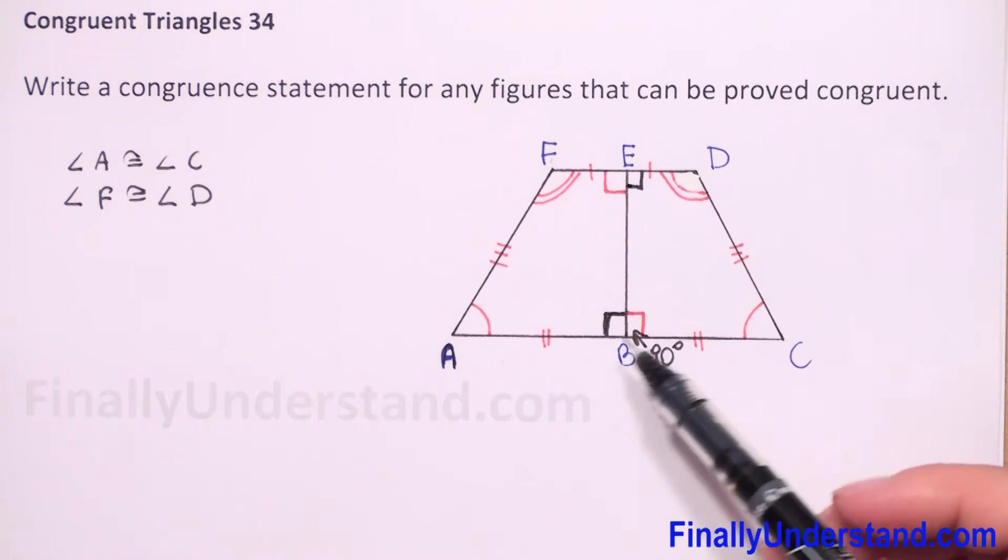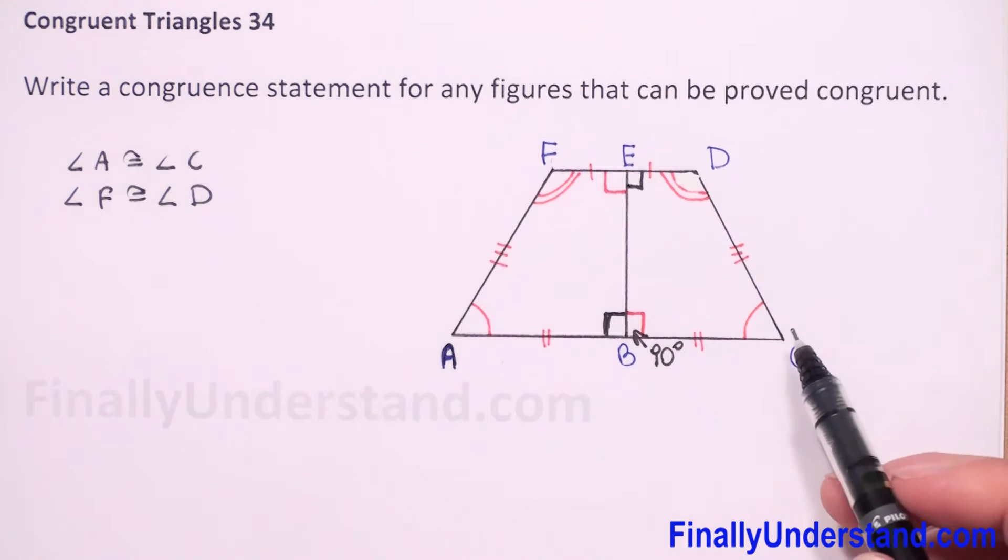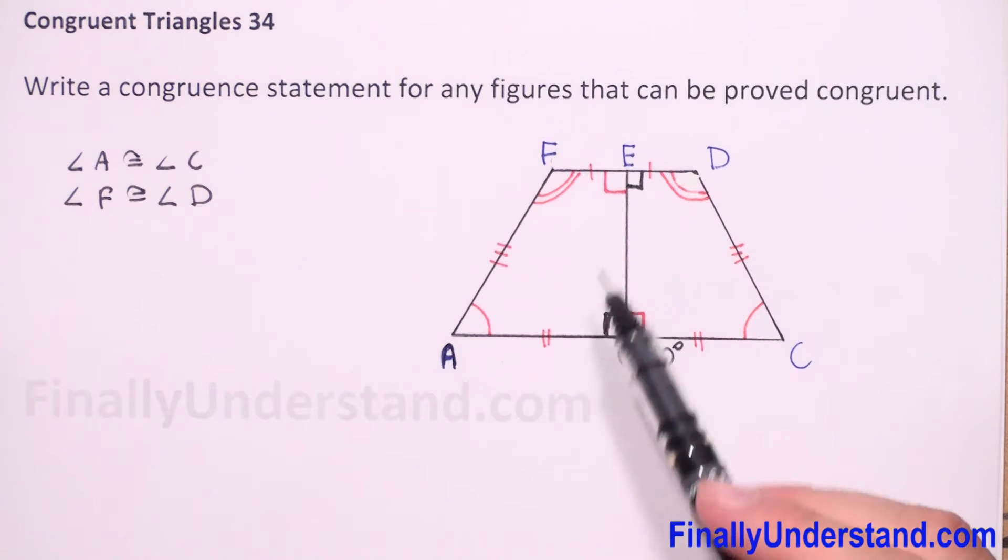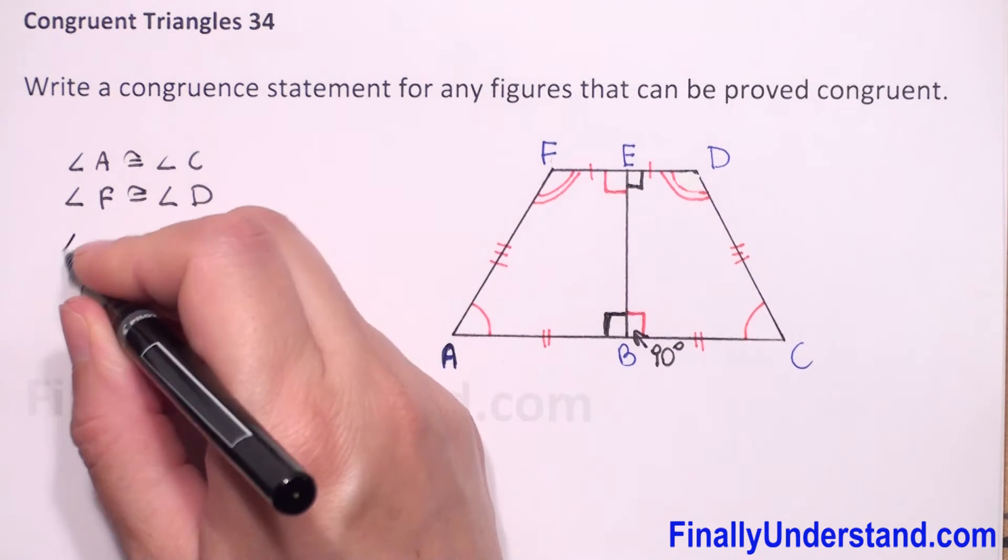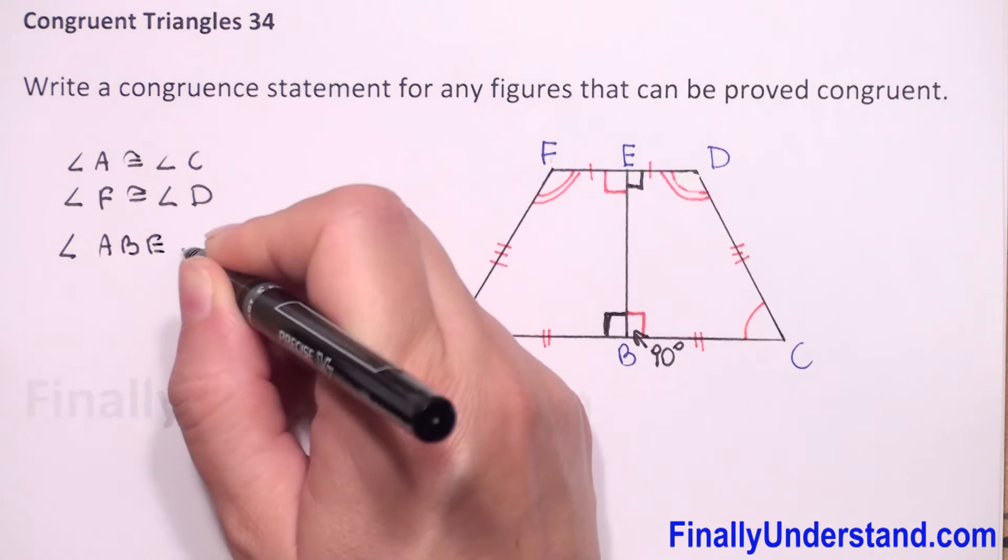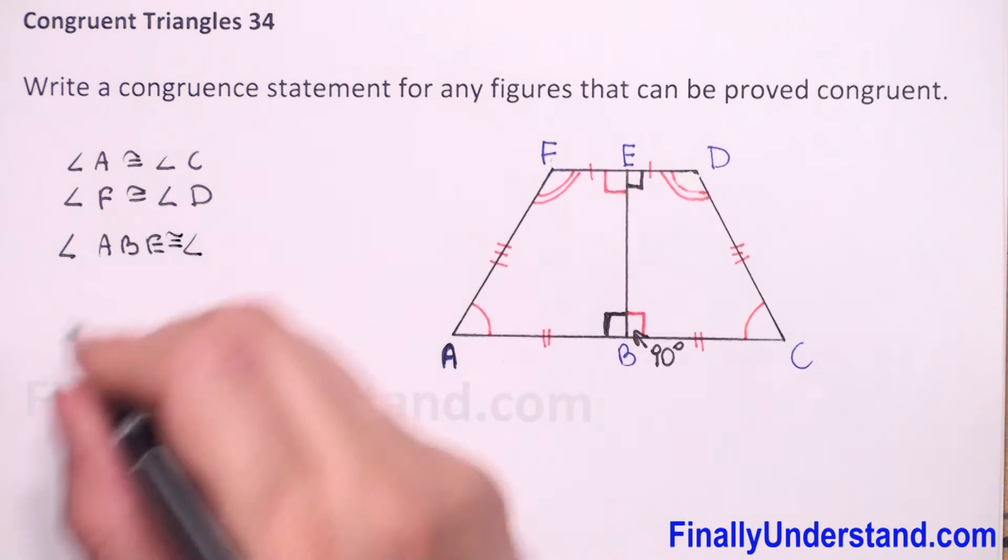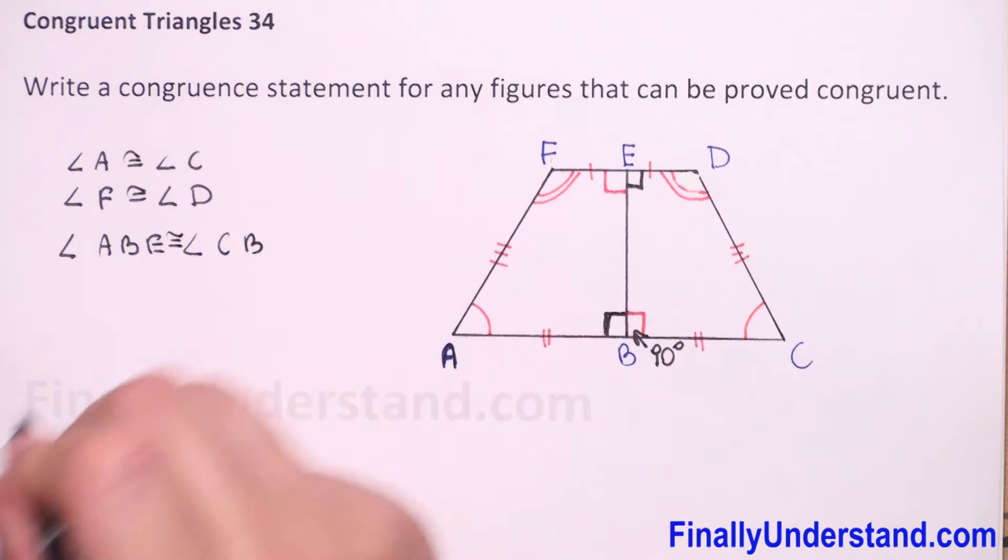So angle ABE is congruent to angle CBE. We can write angle ABE is congruent to angle CBE.